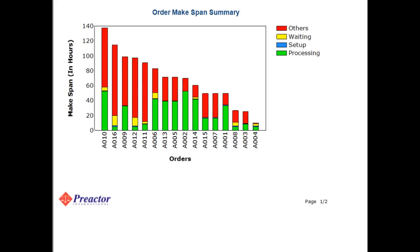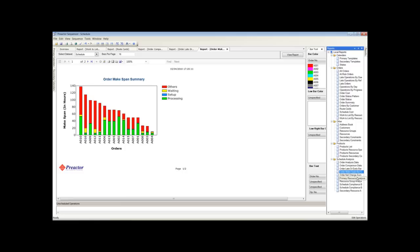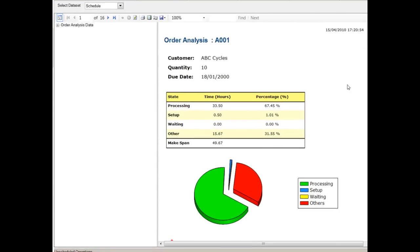The histogram shows the mix span for each order and how that time is broken down into processing, setup, waiting, and off-shift time. You can also break this down by order in the form of a pie chart.